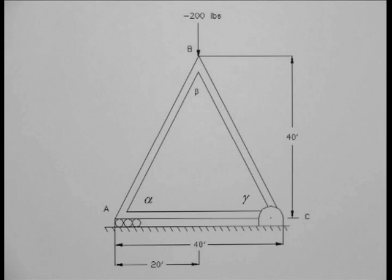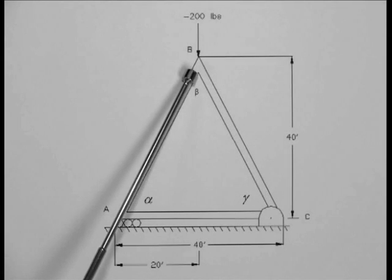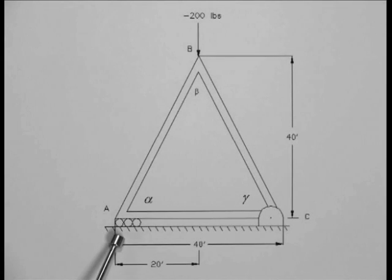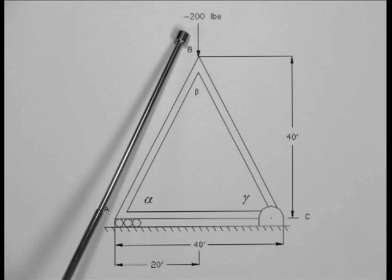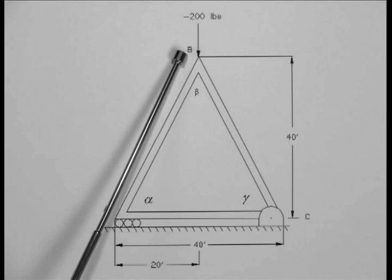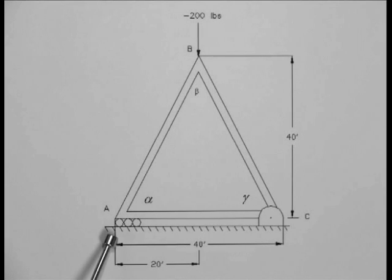For the first problem, we will solve the case of a triangular truss. In this truss, the height of the triangle is 40 feet. The length of the base is also 40 feet, with the force applied at the apex of minus 200 pounds, indicating that it is in the down direction, occurring at 20 feet from one corner of the triangle.